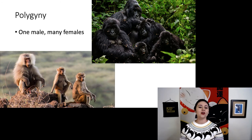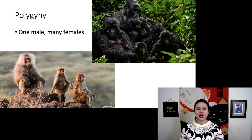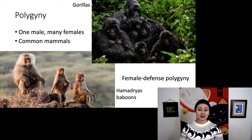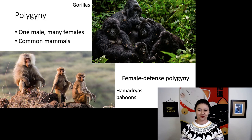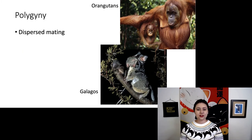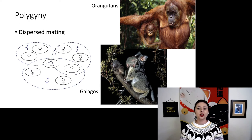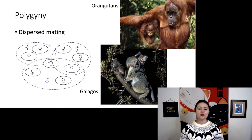Let's talk about polygyny — many females and one male. This is common in a lot of mammals, and we see it in gorillas and hamadryas baboons. These species specifically have female defense polygyny, where one male actively defends a group of females as his group. We can also see a different form of polygyny with dispersed matings, as seen in orangutans and galagos. There, females have small groups next to each other, and one male has a home range that spans across several different females. These species are mostly solitary, but in their mating system one male interacts with multiple females.